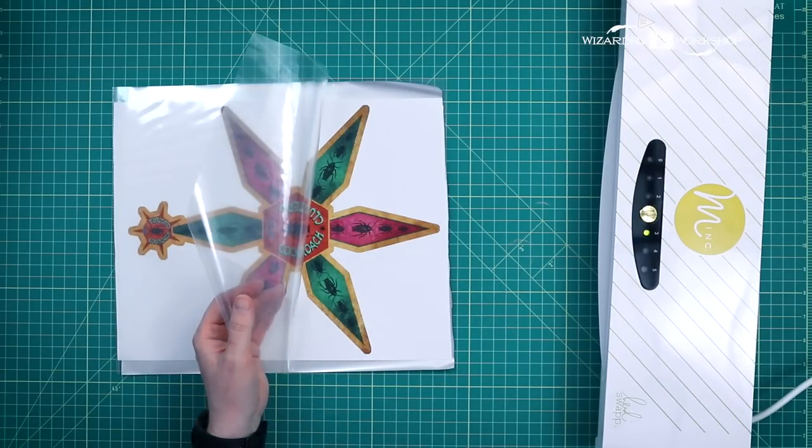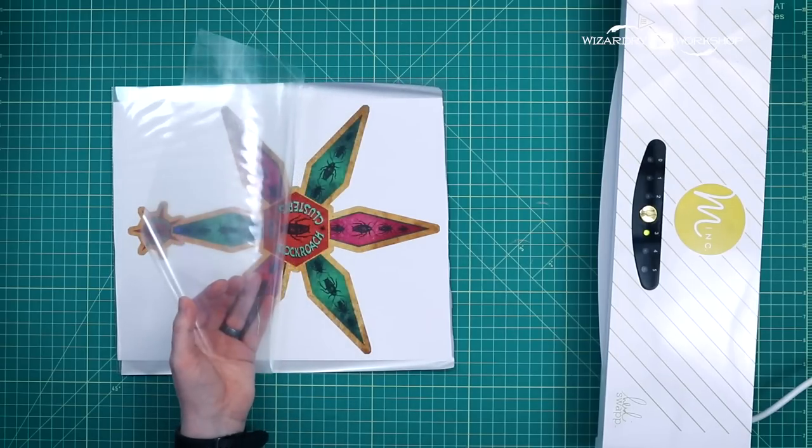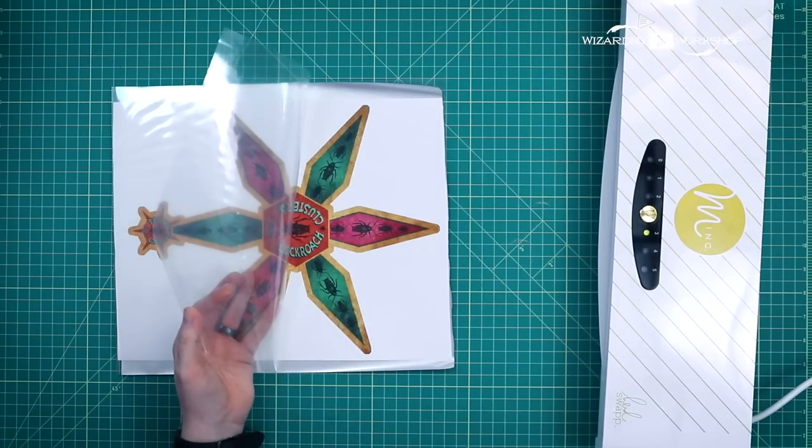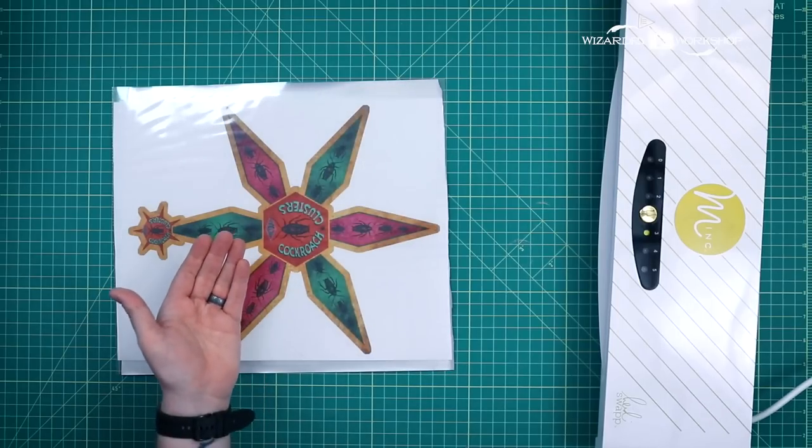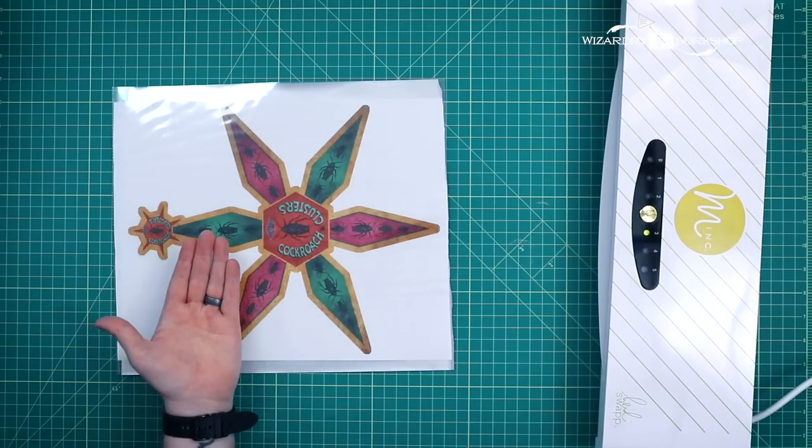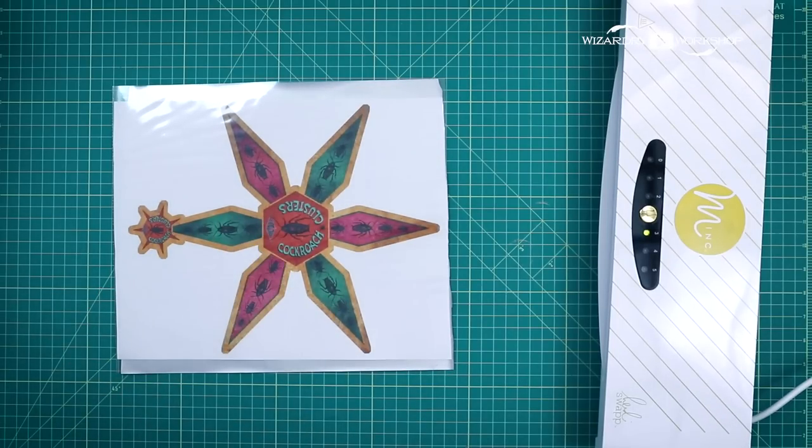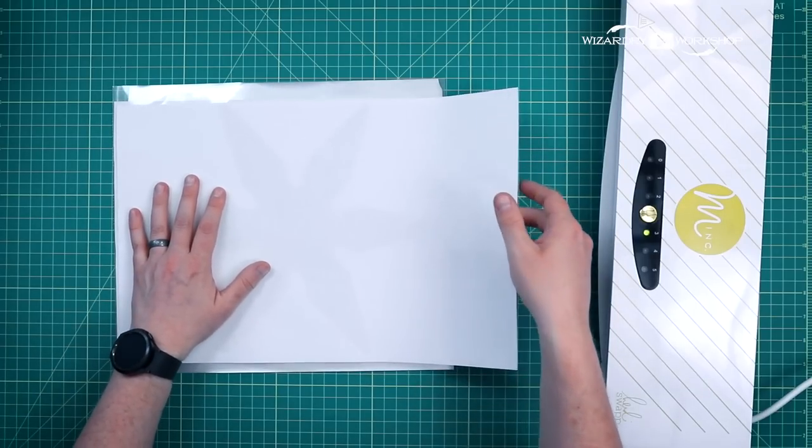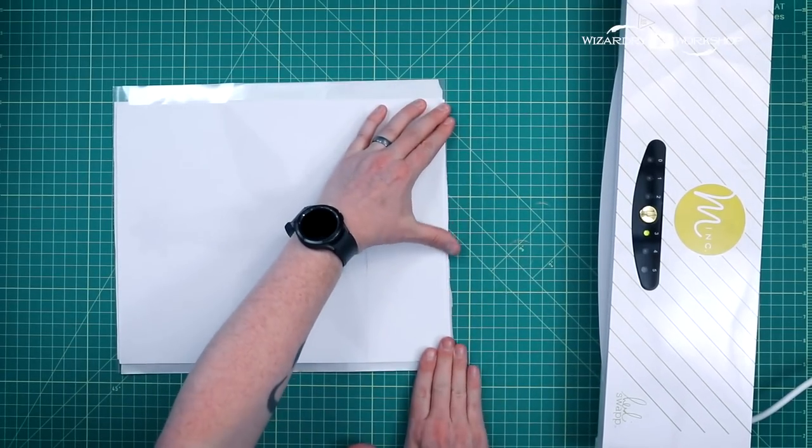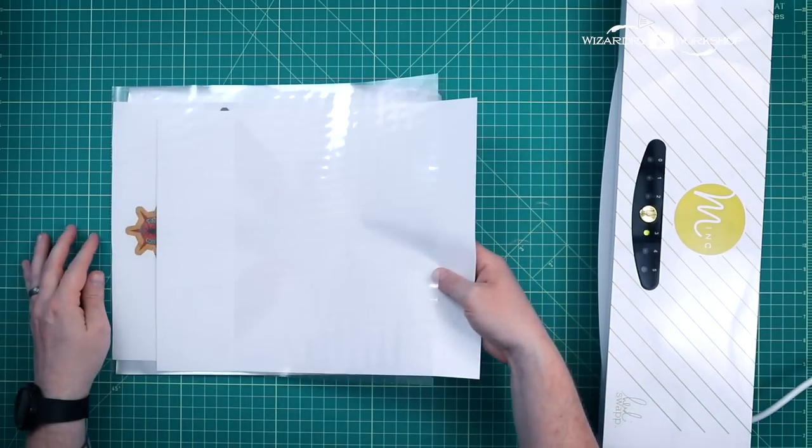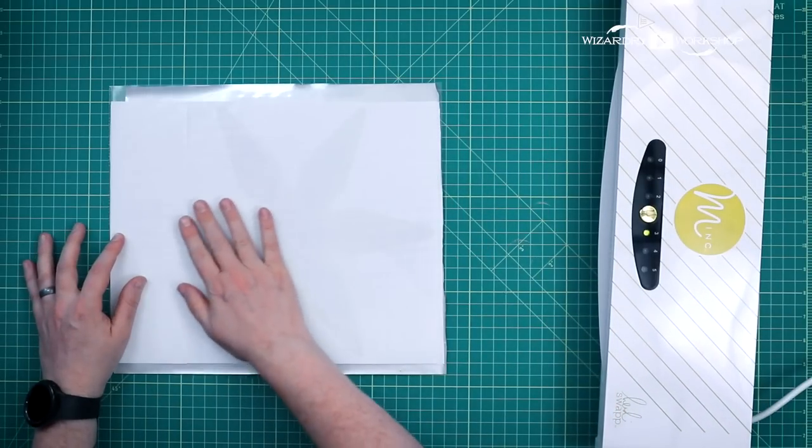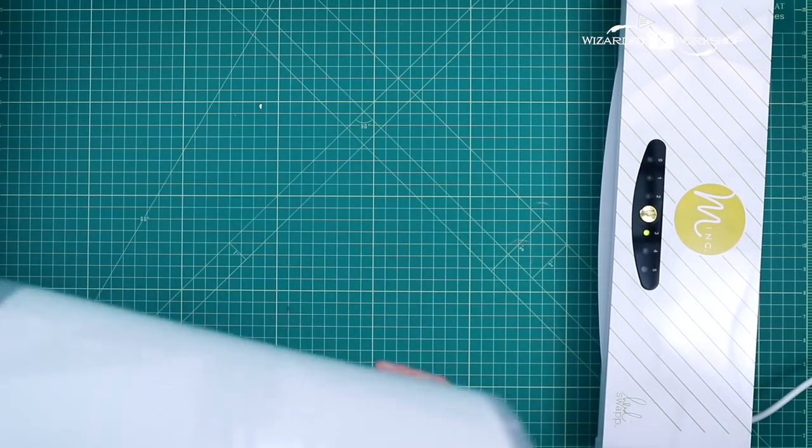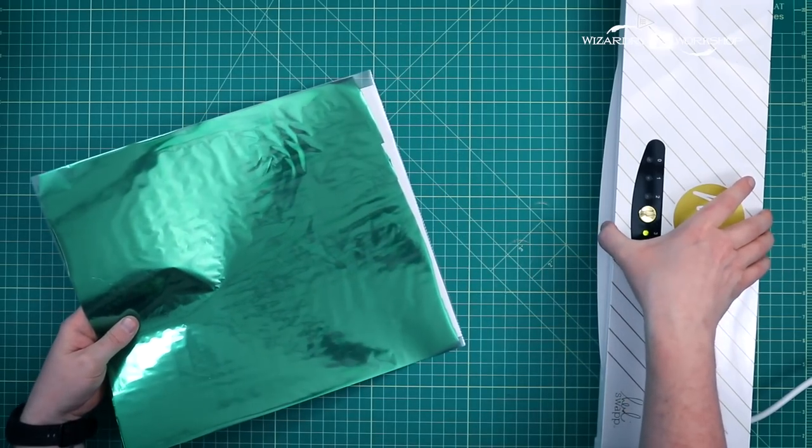And then one more thing. This was printed on a laser printer on that side as well. I don't want it to be just touching the plastic here because some of that toner will come off onto the plastic from the heat. So I'm just going to mask it off with a piece of paper, and I'll put that right in between the folder and the print. And now we're ready to run this through the foil machine.